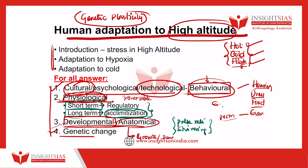The fourth type is genetic changes. These are changes seen at the population level. A community living in a particular environment for a long period of time, generation after generation, undergoes natural selection — certain genes are selected and certain genes are eliminated. Those changes remain in that population generation after generation. We see racial differences as a result of environmental conditions. For example, the Mongoloid race is more adapted to cold environments, having occurred at the population level over generations.